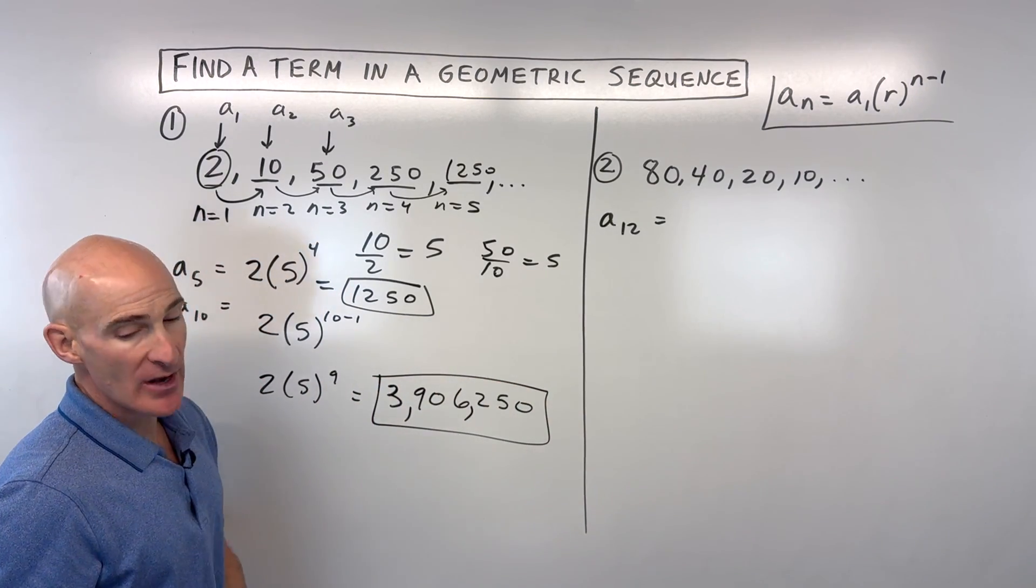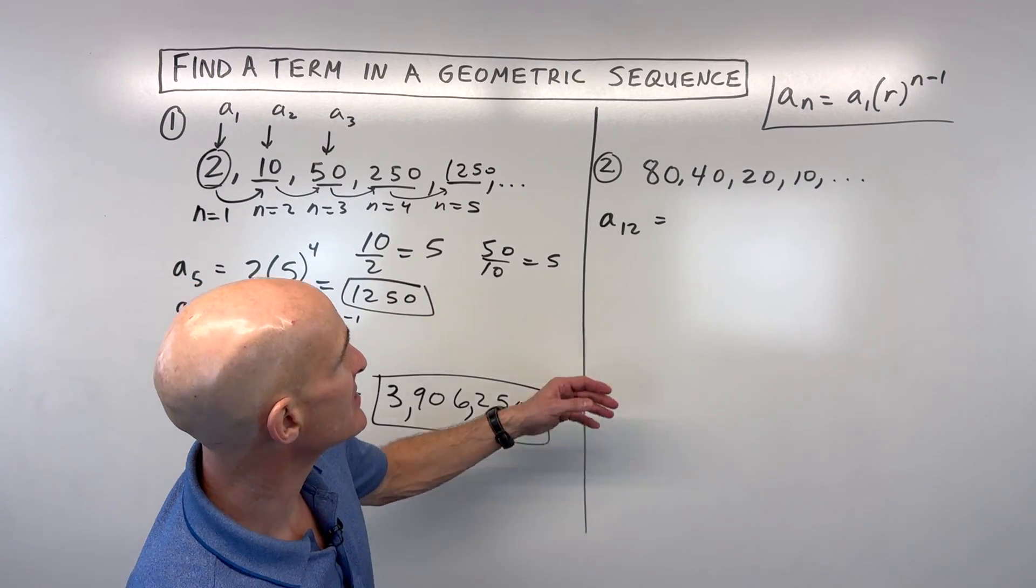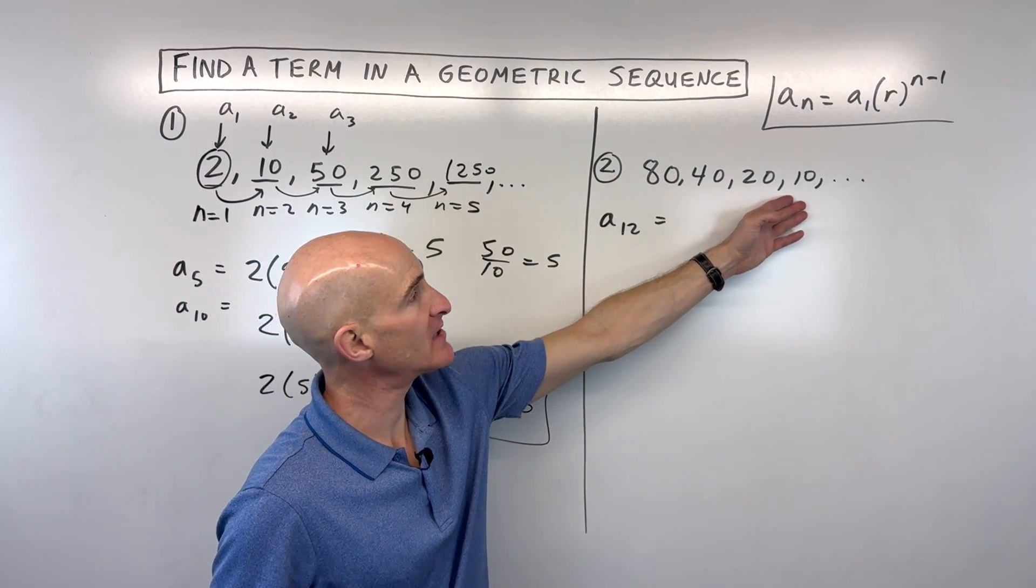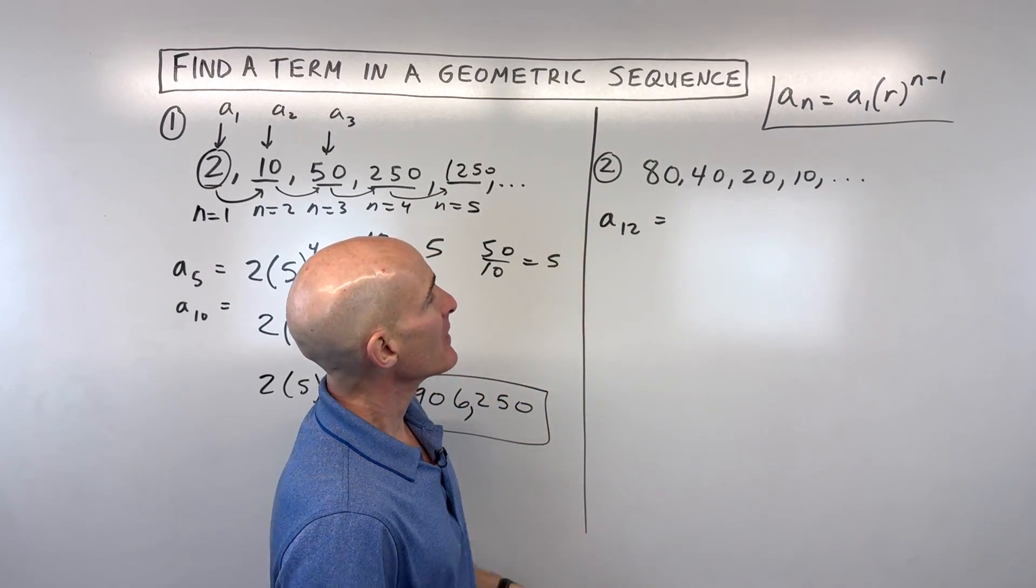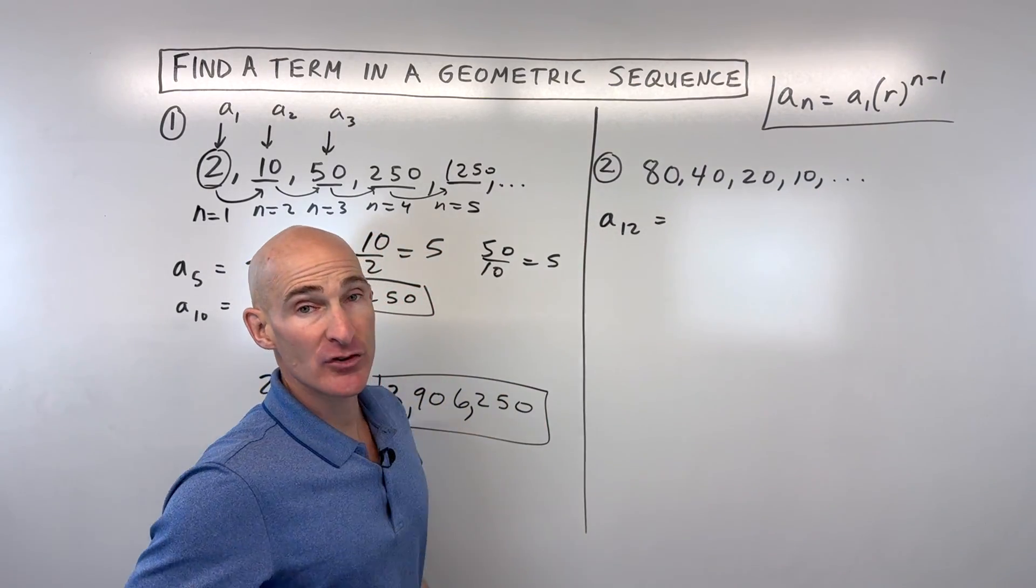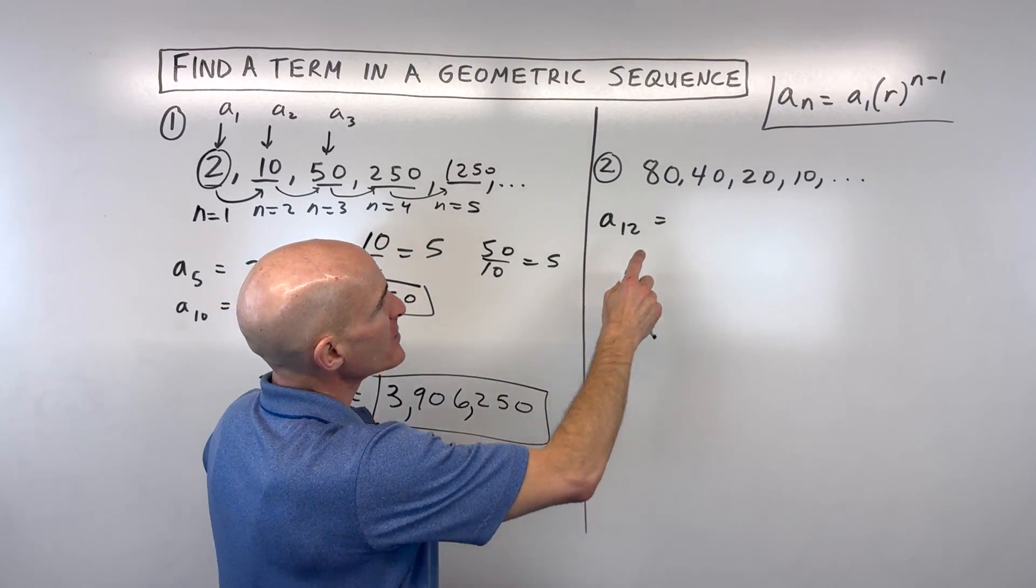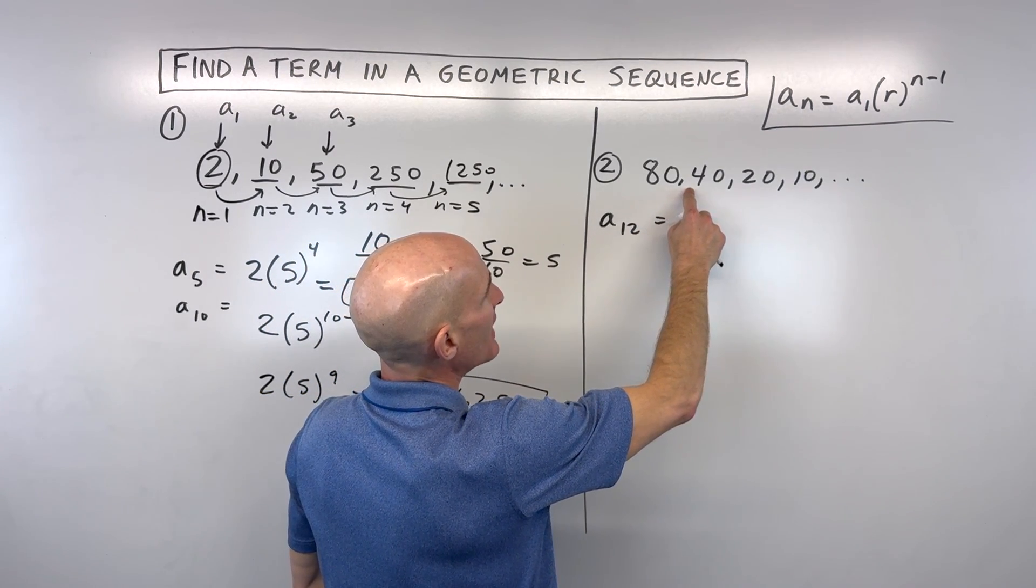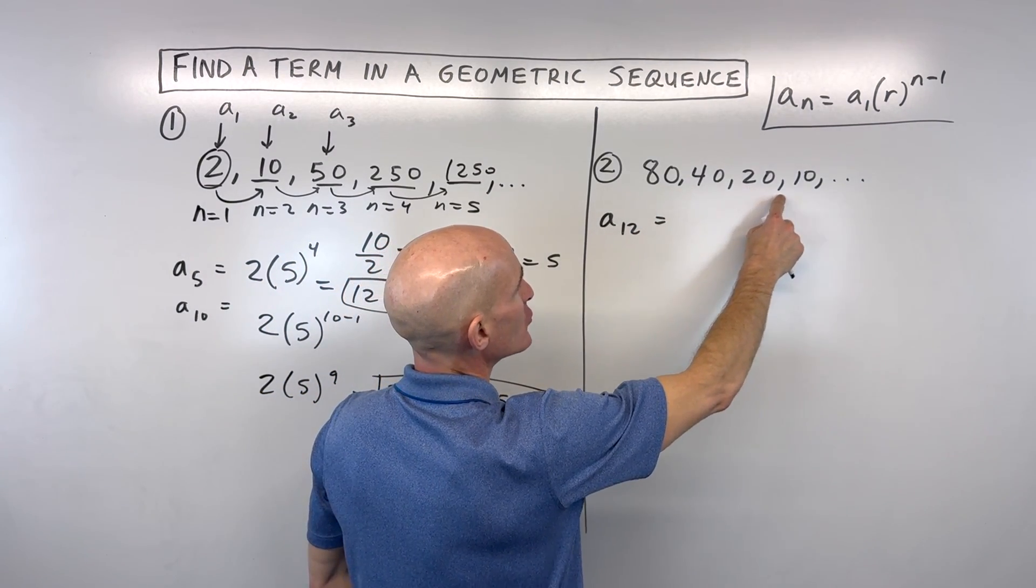Let's go to number 2 now. If you are getting the hang of this, see if you can try this one. We've got 80, 40, 20, 10, dot dot dot. How could we find the value of the twelfth term? Well, what's the pattern here? How are we getting from 80 to 40, or 40 to 20, or 20 to 10?